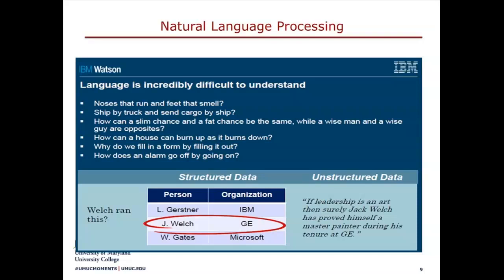Starting with this unstructured text example: 'If leadership is an art, then surely Jack Welch has proven himself a master painting during his tenure at General Electric.' If this is out of context, we don't know what context the phrase is in — you might think about the art of painting. But in the context of General Electric, we can interpret this phrase as related to his tenure as the person who ran the company and was its leader — totally different from what painting and art would suggest.